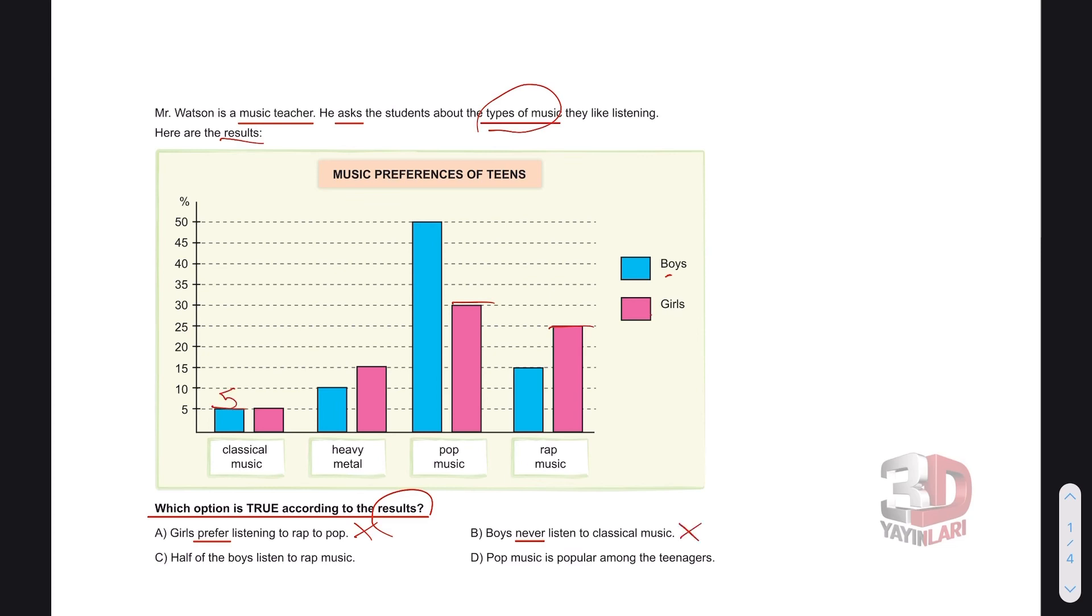Option C: Half of the boys, yarısı, erkeklerin yarısı, listen to rap music. Let's go to rap music. It's here. 15 boys listen to rap music. 15 yarısı olmuyor, this is not true. And D: Pop music is popular among the teenagers. Ergenlerin, gençlerin arasında popüler bir müzik çeşidi pop music. Evet, gerçekten de öyle. It is popular. Cevap D şıkkı.